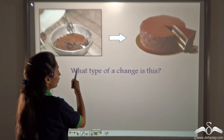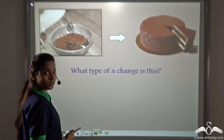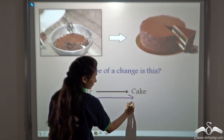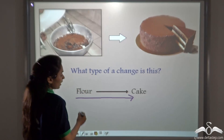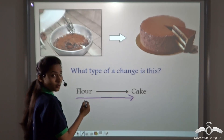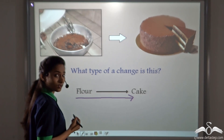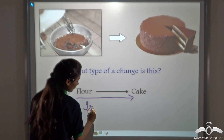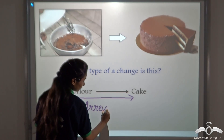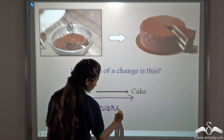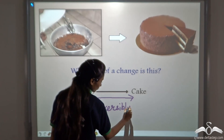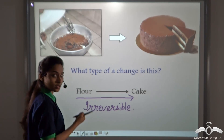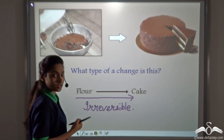Now say, what type of change is baking of a cake? Well, you can get a cake from the flour, but if you are asked to bring back the flour from the cake, you cannot do this. So this is an irreversible change. We learnt that changes can be classified into reversible or irreversible changes.